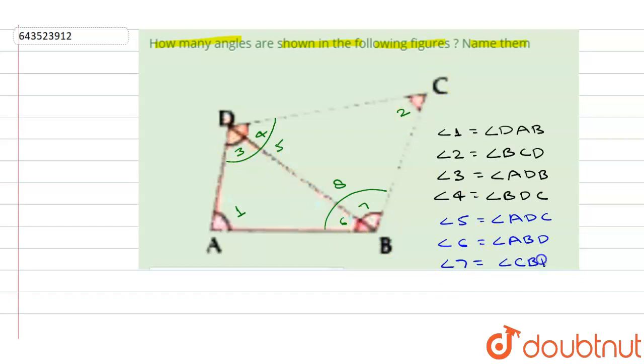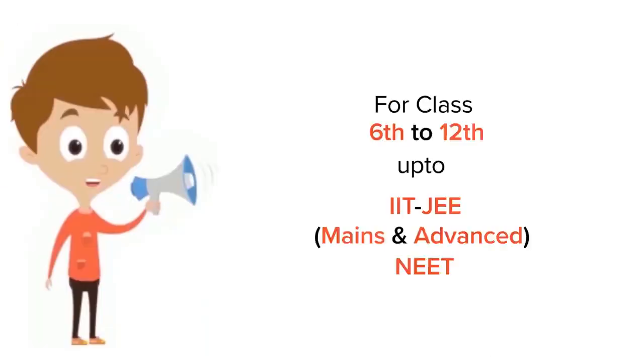Angle seven is found by the line BD and BC, so it will be angle CBD. And at last, angle eight is found between line AB and BC, so it can be given by angle ABC.